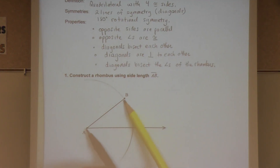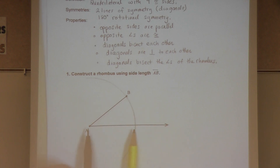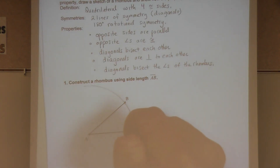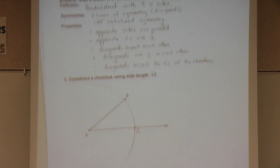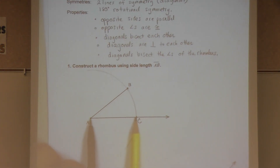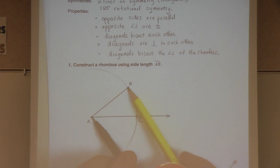Because this length — the radius of the circle — is equal to this length, also a radius of the circle, I know that the lengths are equal. I'm going to call this point C, so length AC is the same length as AB. This length is equal to this length because they're both radii of the same circle.